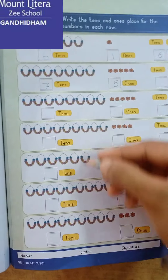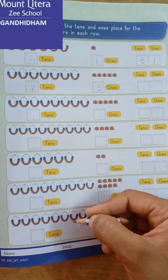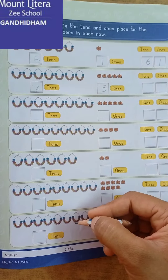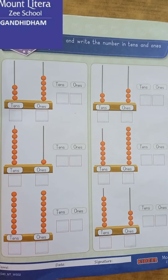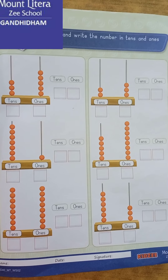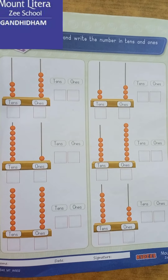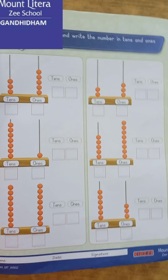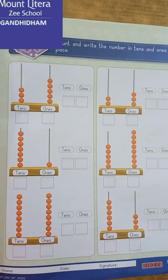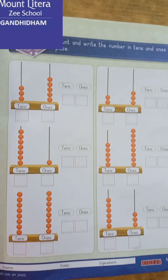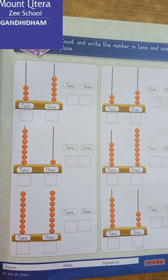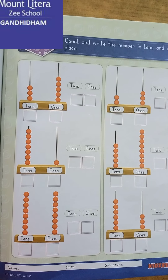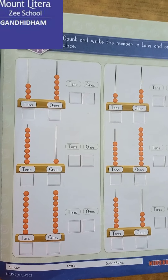Aur aise count karenge aur pure worksheet ko complete karenge. In this worksheet kya karna hai hume? Count and write the numbers in tens and ones place. Ismein bhi hume count karna hai, aur joh number aega usse likhna hai — tens ke place pe aur ones ke place pe.